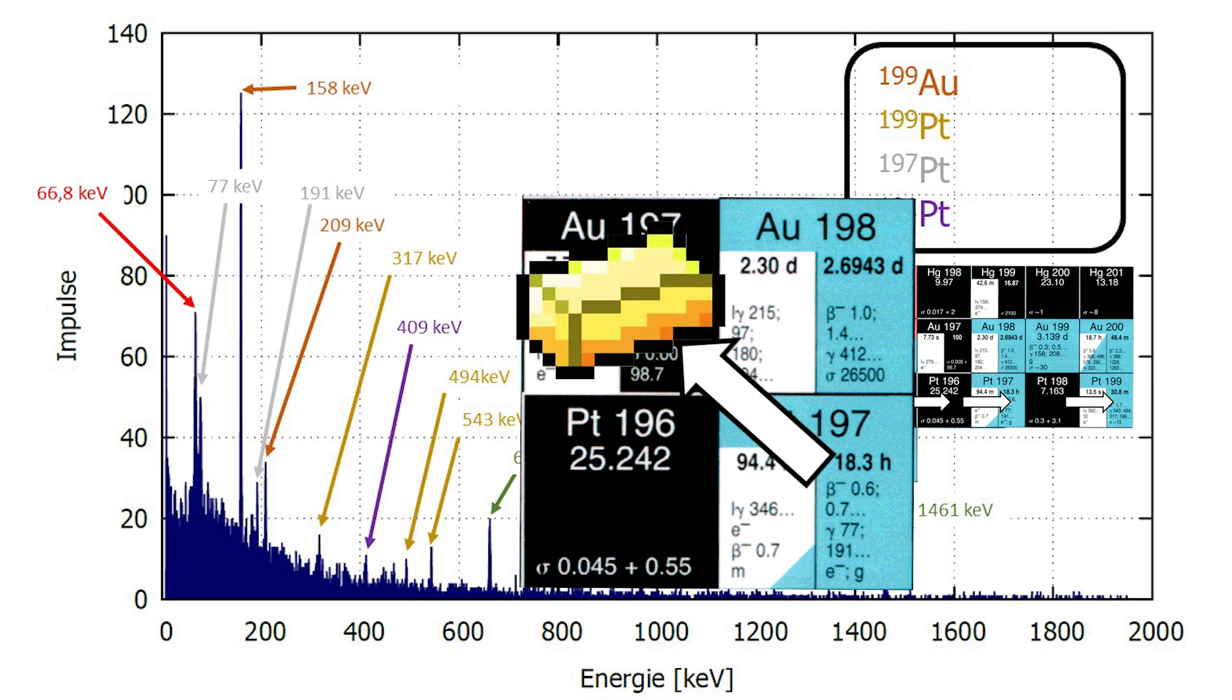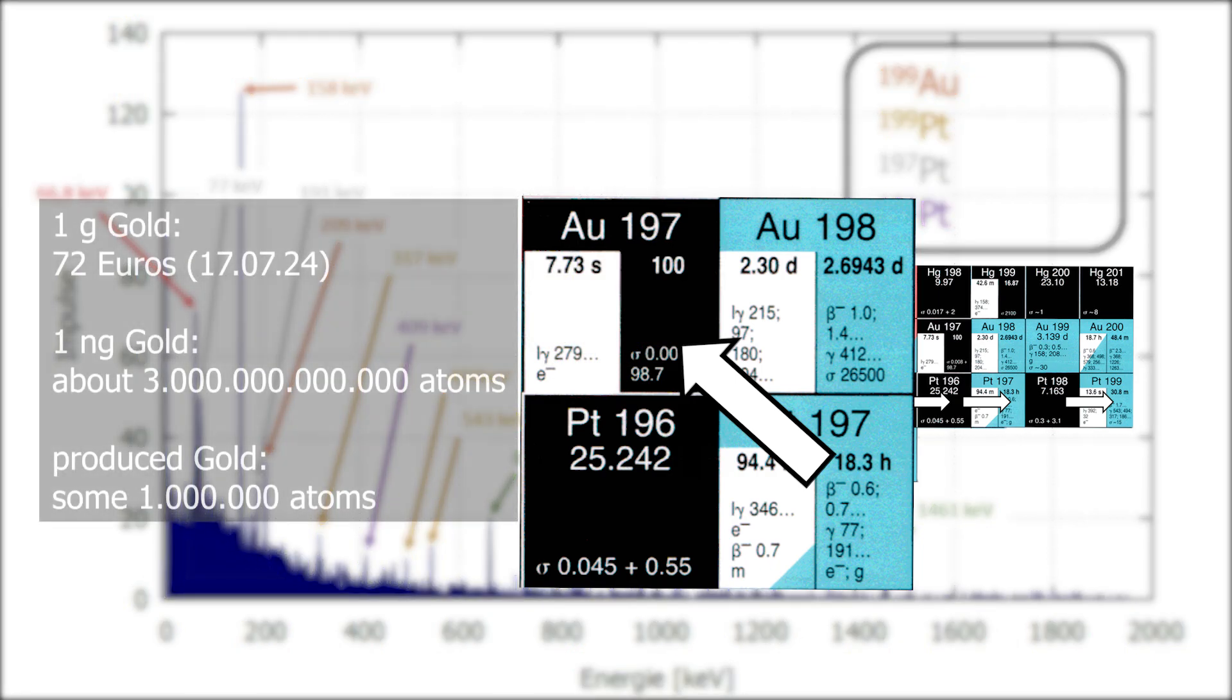So, and then we have gold 197. Stable gold, real gold. Yes, but it's made from platinum. And platinum is a bit more expensive than gold. And only a few million atoms. That's nothing. One nanogram is still three billion atoms.